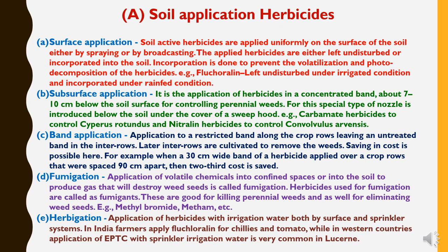For soil application herbicides, the first method is surface application. Herbicides are applied uniformly on the surface of the soil either by spraying or broadcasting. The applied herbicides are either left undisturbed or incorporated into the soil. Incorporation is done to prevent volatilization and photodecomposition of the herbicides. For example, fluchloraline is left undisturbed under irrigated conditions and incorporated under rain-fed conditions.